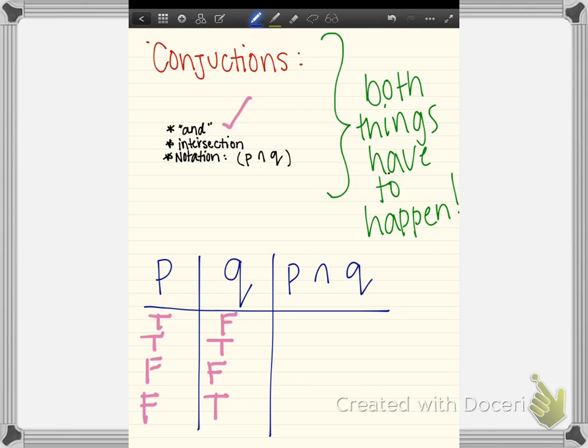As we already said, in order for P and Q to be true, both things have to happen. So the only one where both things happen, both things are true, is right here: true and true. All of the other ones have a false statement at least once. As soon as you see one false statement, the whole thing or the whole intersection is false, and that's the idea of an intersection.